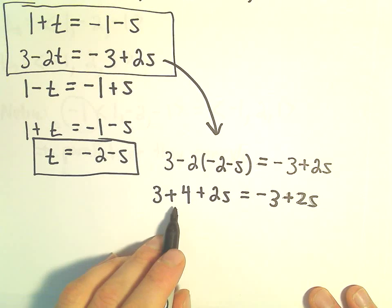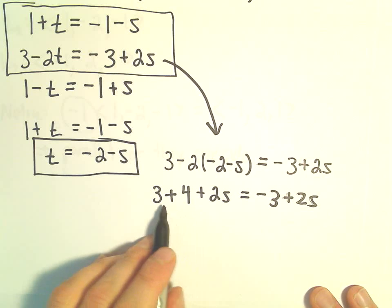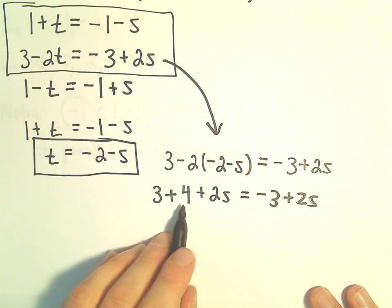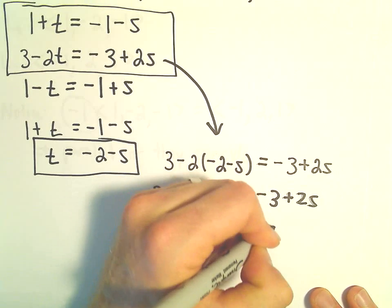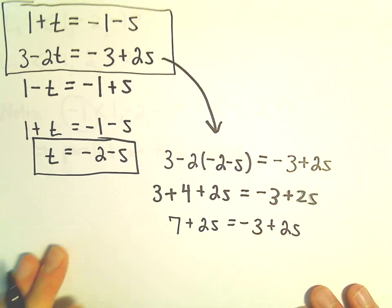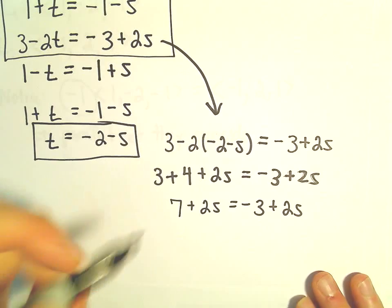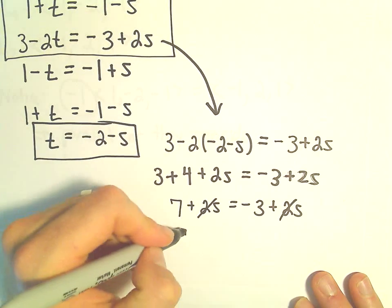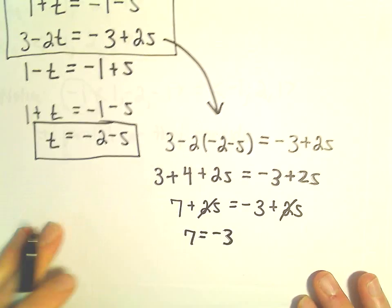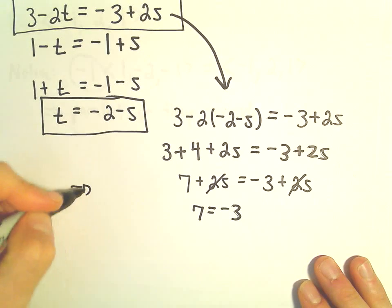I think you can see here pretty quickly, though, there's not going to be a solution to this. Because we get 3 plus 4, we've got 7 plus 2s equals negative 3 plus 2s. If we subtract 2s from both sides, we'll just be left with 7 equals negative 3. And what that simply tells me is that there's no solution.